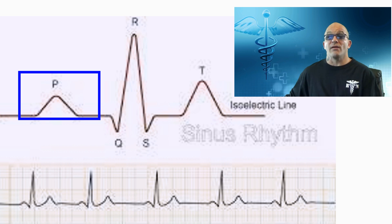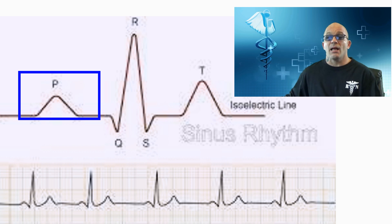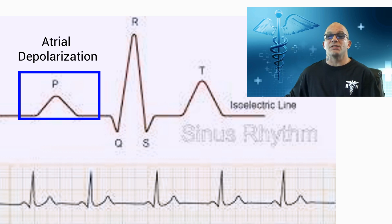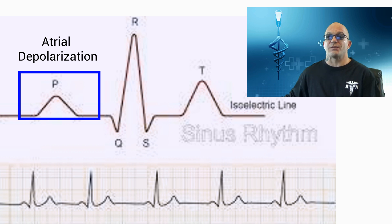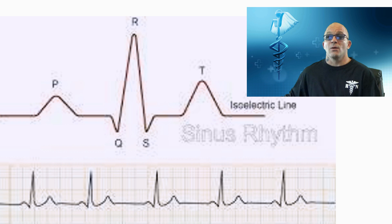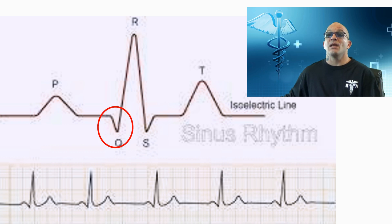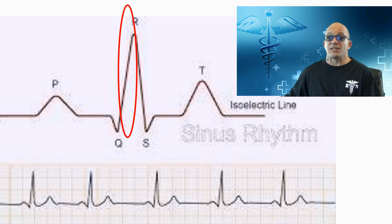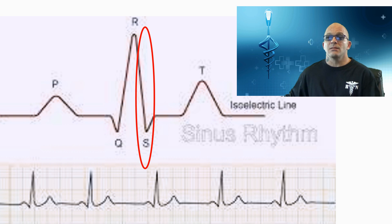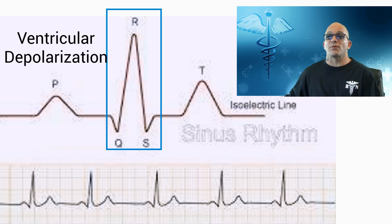The first wave, which is the P wave, is the first deflection and is normally a positive or upward wave, and it indicates atrial depolarization or contraction. The QRS complex follows the P wave, and it normally begins with a downward deflection, which is the Q. Then it has an upward deflection, which is the R, and another downward deflection, the S. Together, the QRS complex represents ventricular depolarization or contraction.